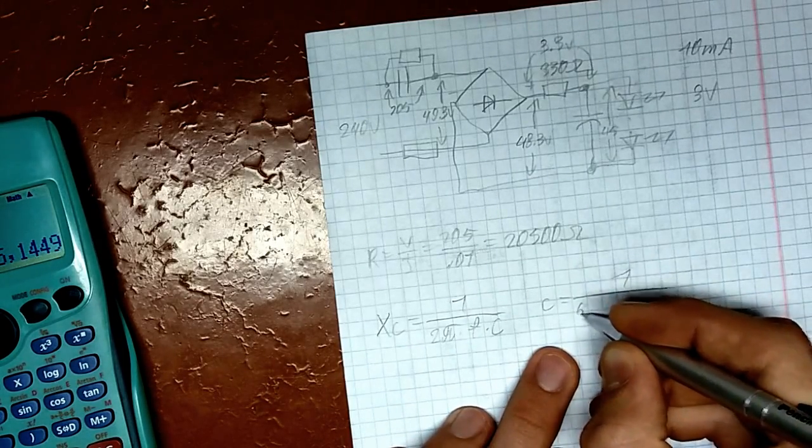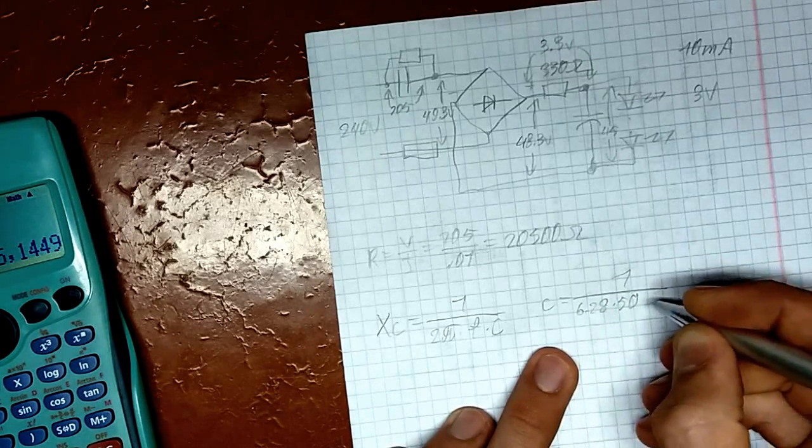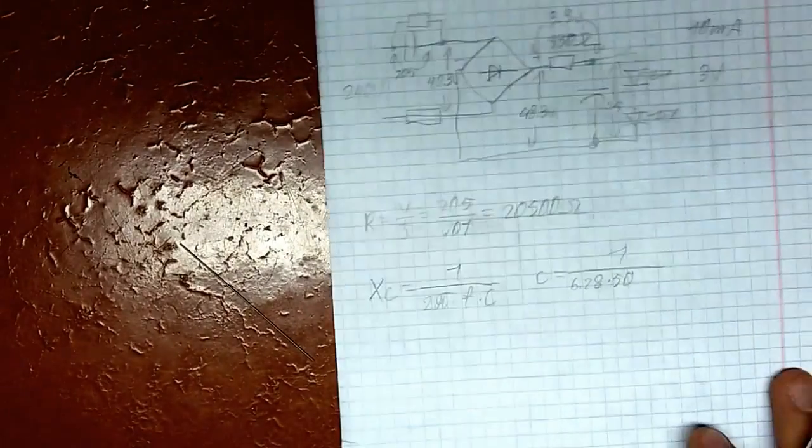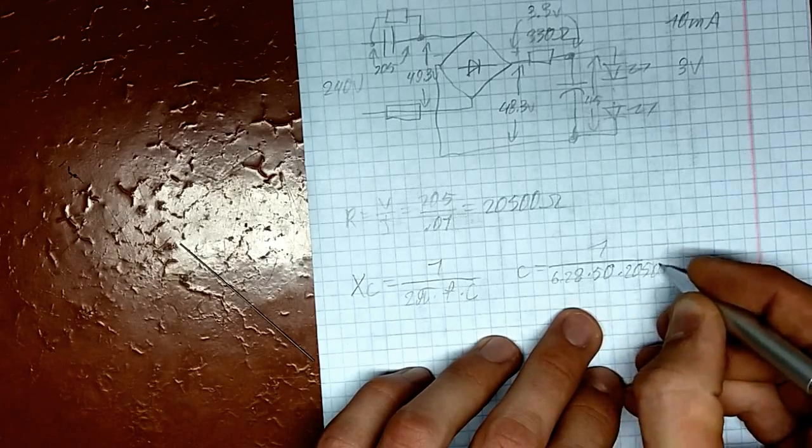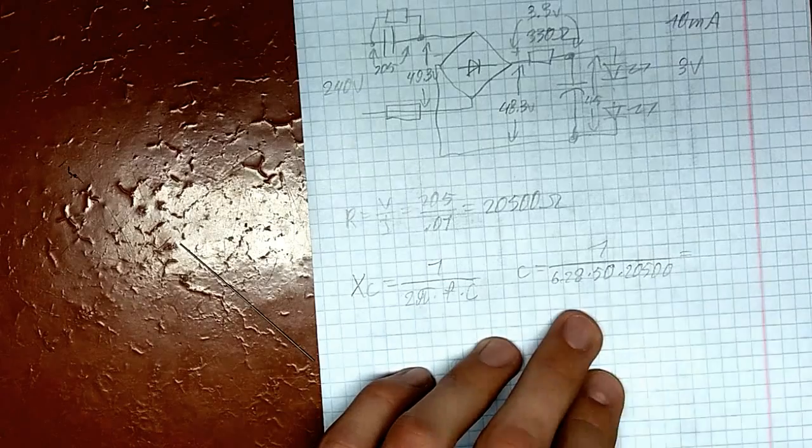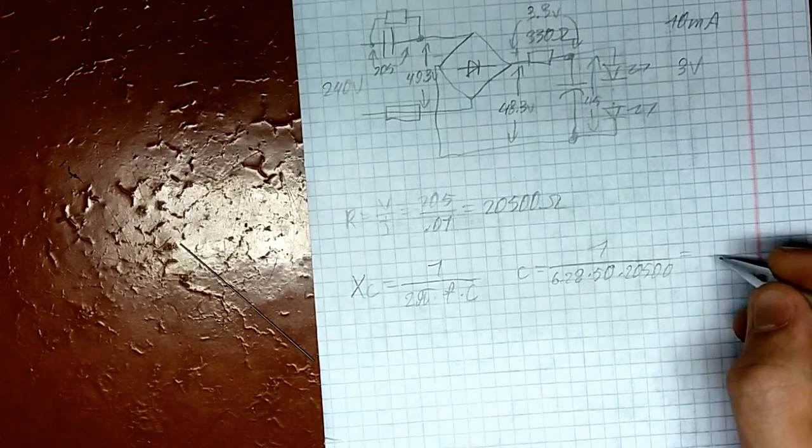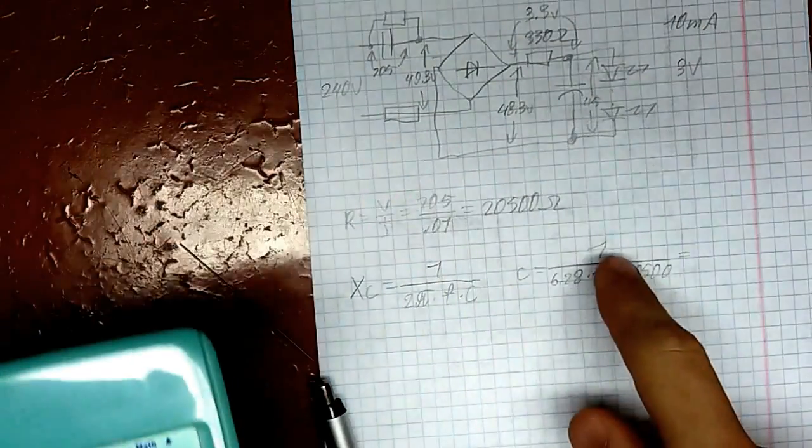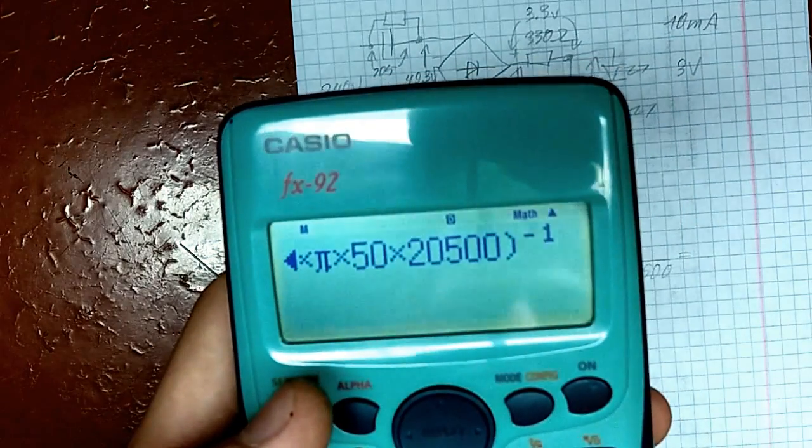So, we put those values in. 2 pi, roughly 6.28 times your frequency, 50. That's awesome. Alright, this stuff always happens in the middle of a rush. Times your Xc, which is 20,500 Ohms. And the value which we will get is gonna be, in my case, let me punch it in. Alright, as you can see, into 1 over this is the same as all of this.